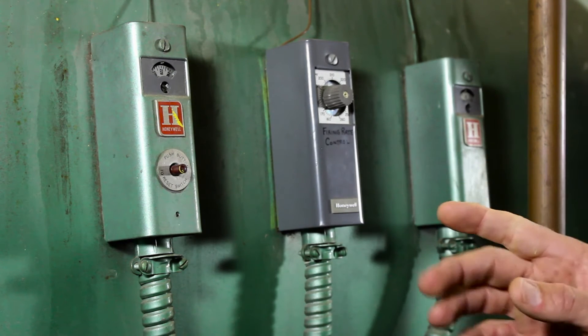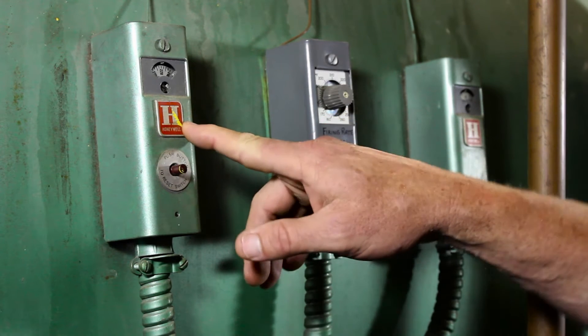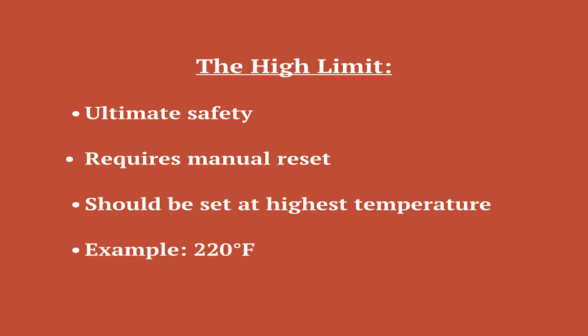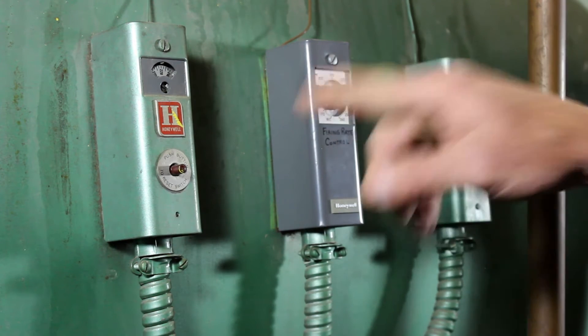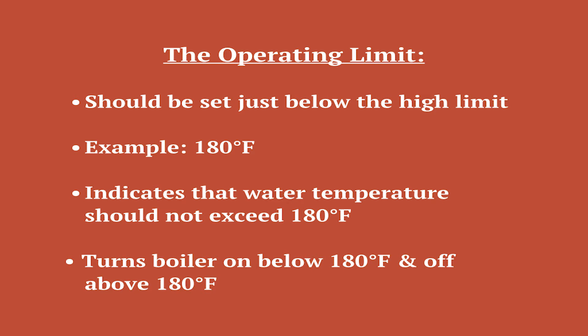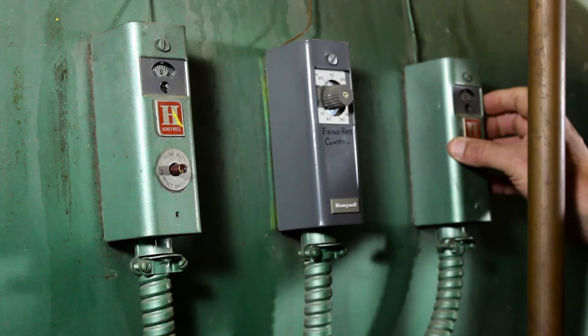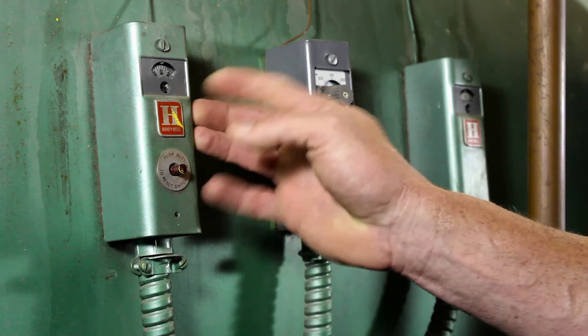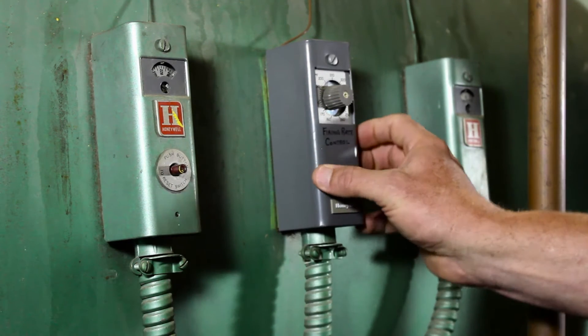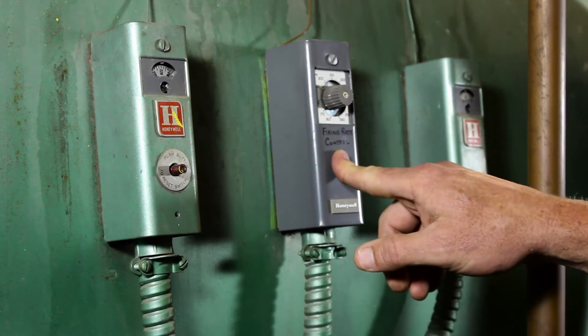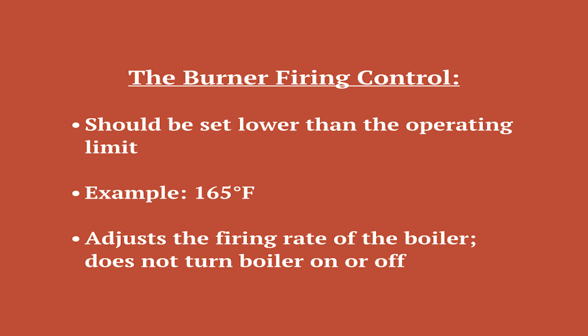The way these controllers function: your high limit is your ultimate safety, and it should be set at the highest temperature — this particular one is set at 220 degrees. Then your next safety down is your operating limit, and it should be set just below your high limit, or whatever your operating limit is going to be. This particular one is set at 180, which indicates they don't want water temperature to exceed 180 under normal circumstances. If this controller fails and the water temperature continues to rise and gets to 220, then this manual reset controller will trip it off. Your last controller is your modulating controller, which is your firing rate, and it should be set less than your operating limit.